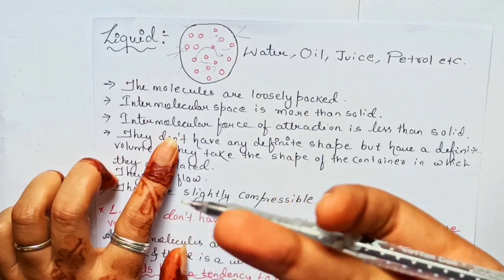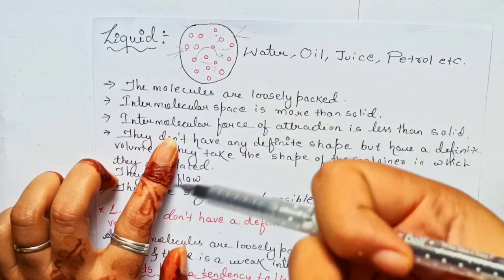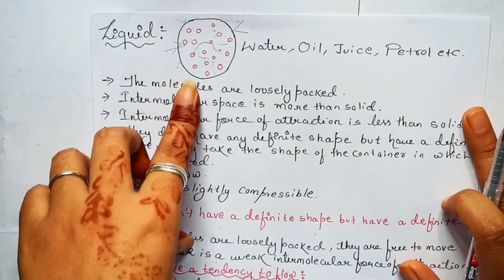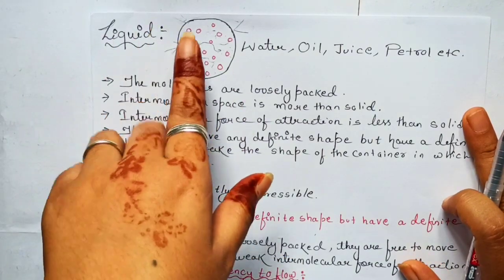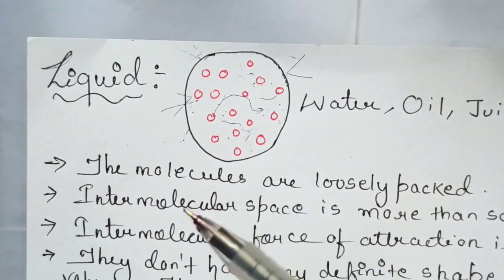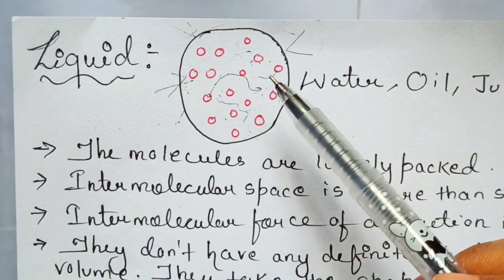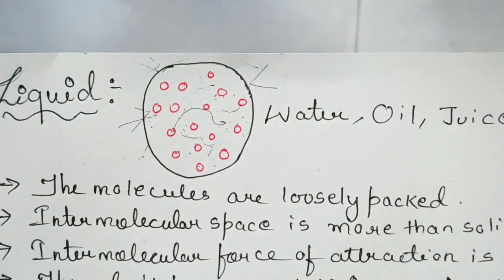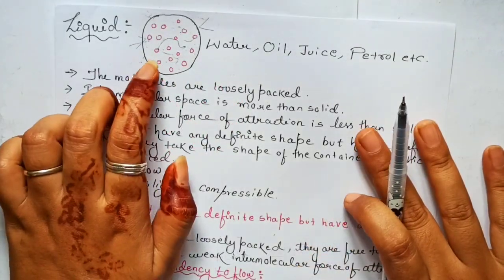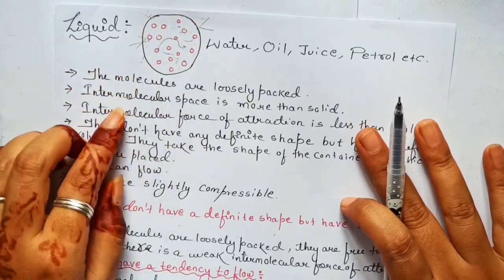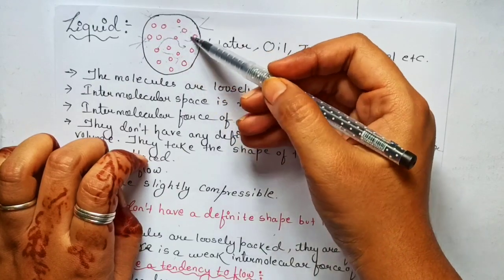Liquid is a state of matter, and if it is matter then it has small atoms and molecules present in it. Every state of matter has a different arrangement of molecules. We have already covered solids. Now let's see how atoms and molecules are arranged in liquid. In liquid, atoms are loosely packed — they are not tightly packed, not close to each other.